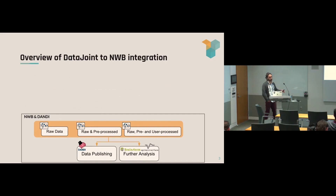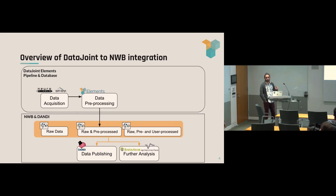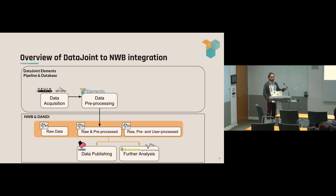The potential for using NWB files as part of DANDI and interoperability with the whole NWB ecosystem is clear. Where DataJoint can come in is to help in the process from data acquisition to pre-processing and analysis, providing a relational database backend for the day-to-day of experimental implementation. Element Array Ephys is our most developed element and it currently, through Ben's help, has a great export function that will export a session into an NWB file.